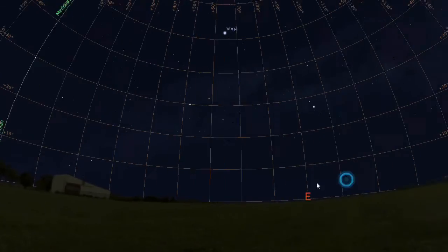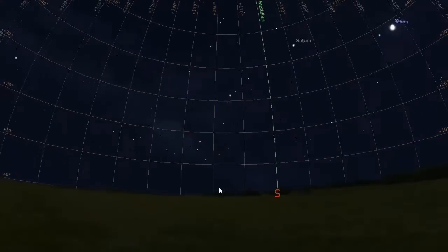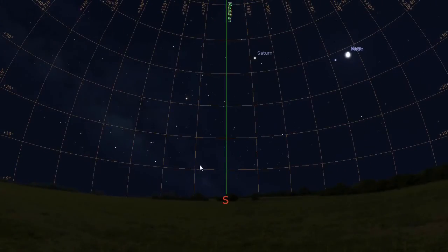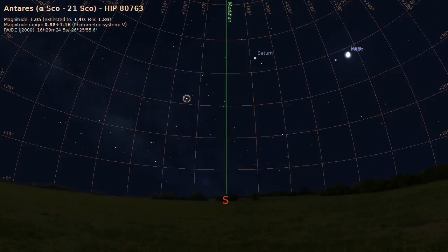It passes through the north point on the horizon, through the celestial pole, up through the point directly overhead called the zenith, and then through the south point on the horizon.